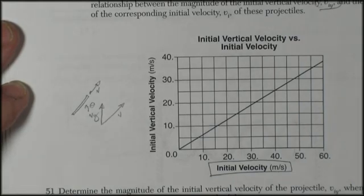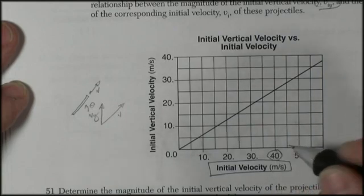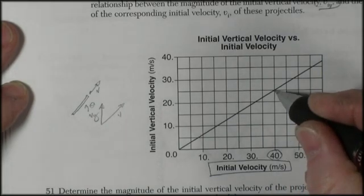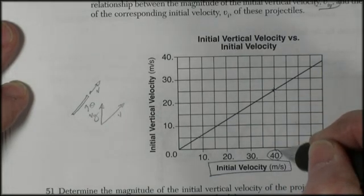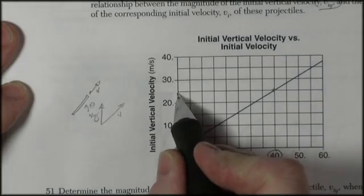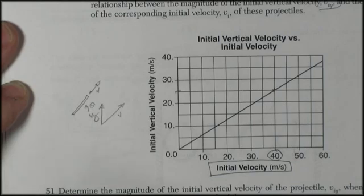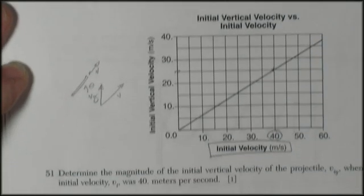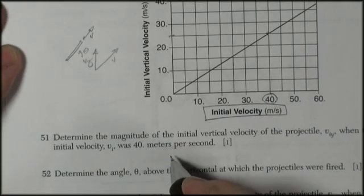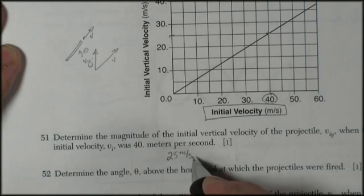Question 51: determine the magnitude of the initial vertical velocity when the magnitude of its velocity is 40 meters per second. This is worth one point, so it's a simple read off the graph. At 40 meters per second, the correct answer would be about 25 meters per second.